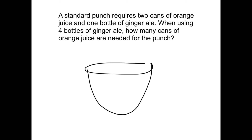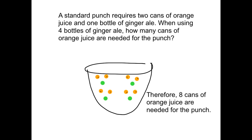So let's answer the question: how many cans of orange juice did we need when we used four bottles of ginger ale? For every bottle of ginger ale, we had two cans of orange juice. And as we just discovered, altogether we have eight cans of orange juice when we use four bottles of ginger ale. Therefore, eight cans of orange juice are needed for the punch — sounds yummy! Now remember, this was just one way of solving this problem using diagrams. Can you think of other ways we could have solved this problem without using diagrams? Check out our proportional reasoning playlist to see the other methods.